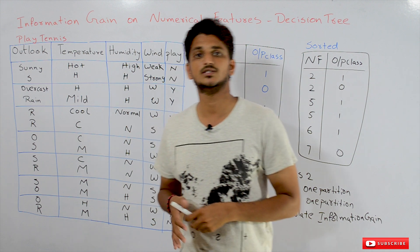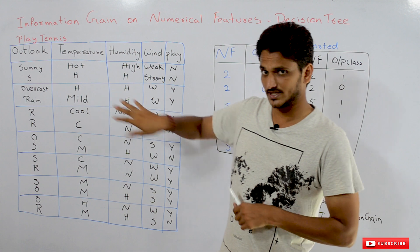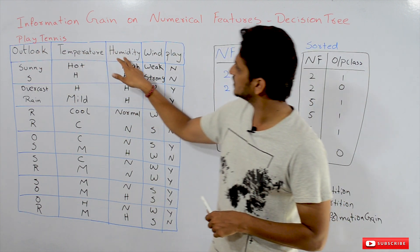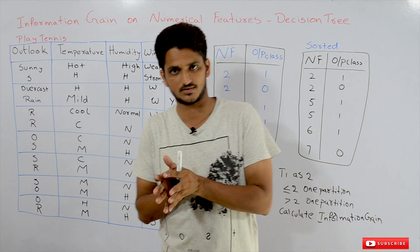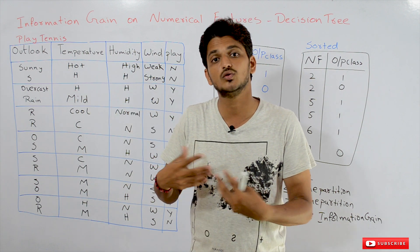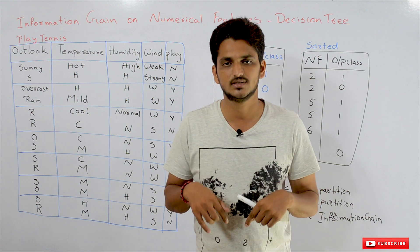The example dataset which we considered in our previous classes is the play tennis dataset. Just take a look at this dataset: we have 4 columns - outlook, temperature, humidity and wind. All these columns are categorical features. We do not have numerical features in this dataset. That is why we will understand how to calculate information gain on numerical features in this class.